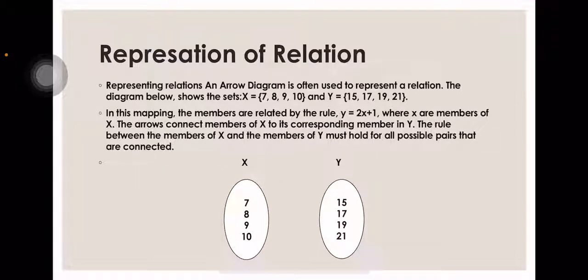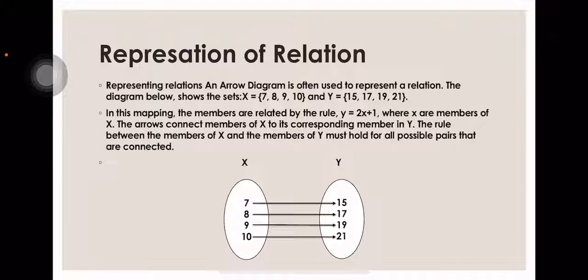So, in the set of X, we have 7, 8, 9, and 10. And in the set of Y, we have 15, 17, 19, and 21. How do we know if it is a function? When it is 1-to-1, the output is unique — that means it's a function. For one value of X, there is one value of Y — it is 1-to-1. For example, the value of 7 maps to 15. There is only one value in Y, which is 15. That is what we call 1-to-1, meaning it is a function.